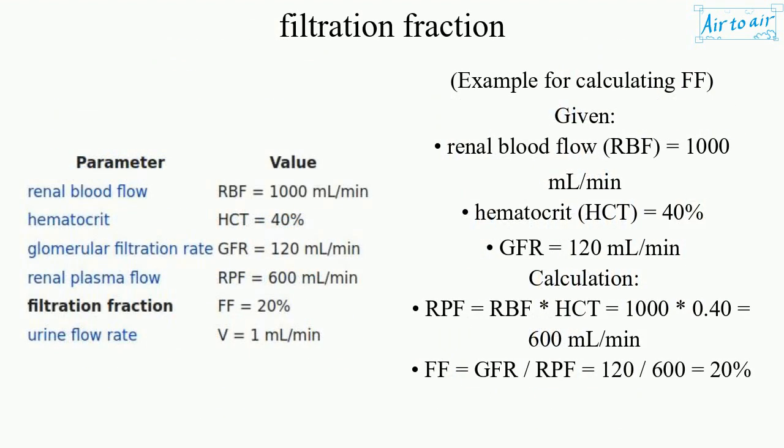Example for calculating FF. Given: renal blood flow, RBF, equals 1000 milliliters per minute; hematocrit, HCT, equals 40%; GFR equals 120 milliliters per minute. Calculation: RPF equals RBF times (1 minus HCT) equals 1000 times 0.40 equals 600 milliliters per minute. FF equals GFR over RPF equals 120 over 600 equals 20%.